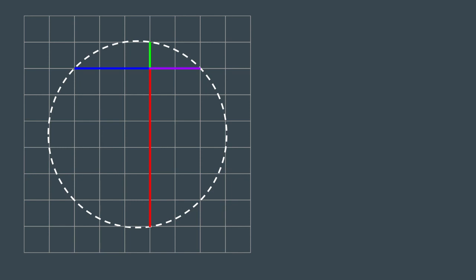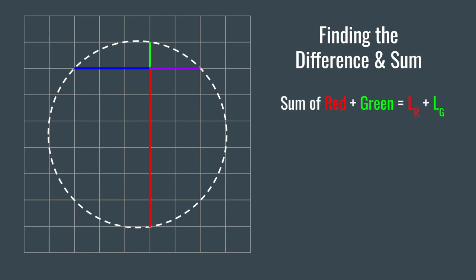The first operation we can perform is finding the difference and sum. Now, finding the sum is quite easy. The sum of the red line segment and the green line segment is simply the length of the red line segment plus the length of the green line segment, denoted by this large yellow line segment.